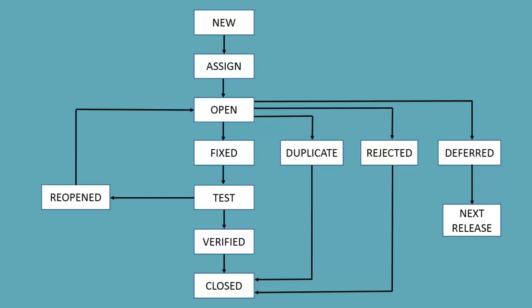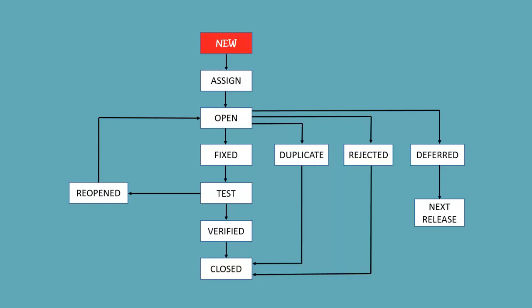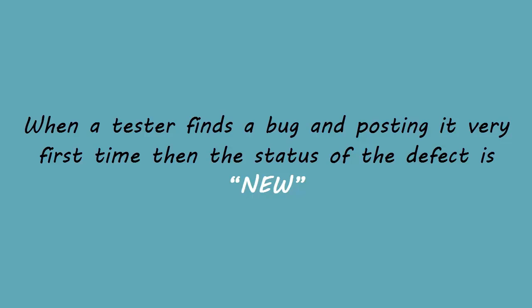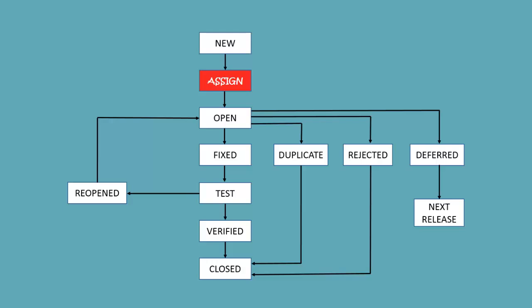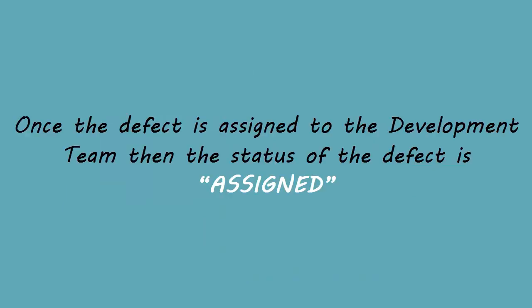Now we see the different states of bug in the bug lifecycle in detail. New: when a tester finds a new defect, the status of the defect posted by the tester is 'new'. The tester should provide a proper defect document to the development team to reproduce and fix the defect. Defects which are in the status of 'new' will be approved if valid and assigned to the development team by the test lead, project lead, or project manager.